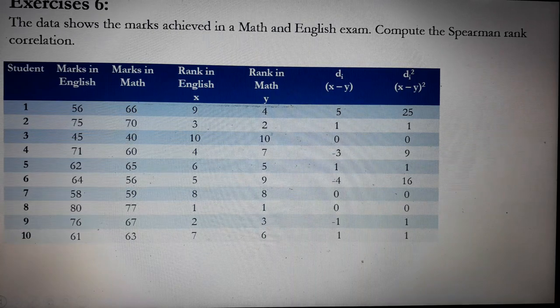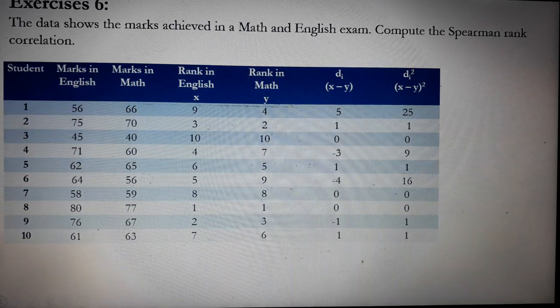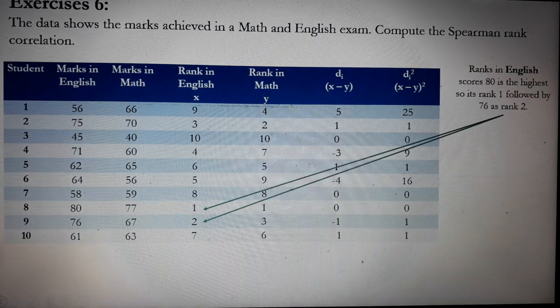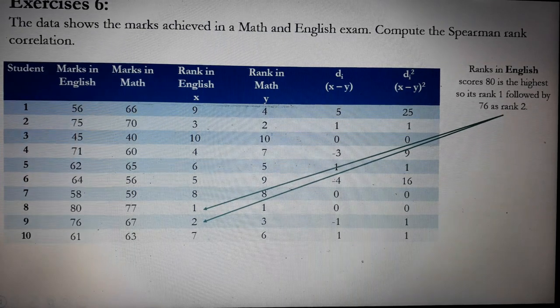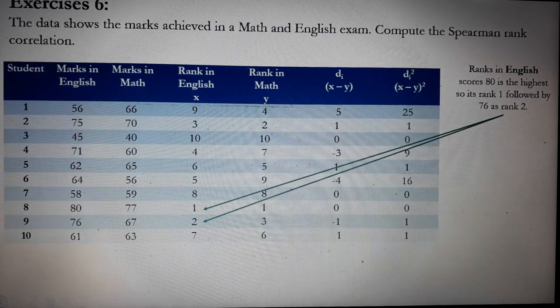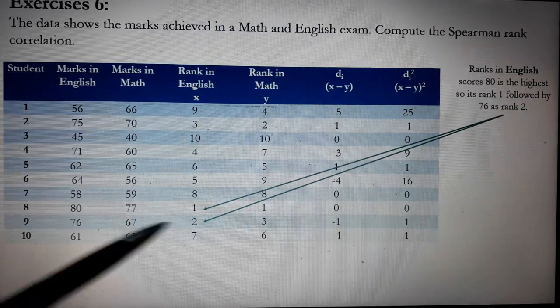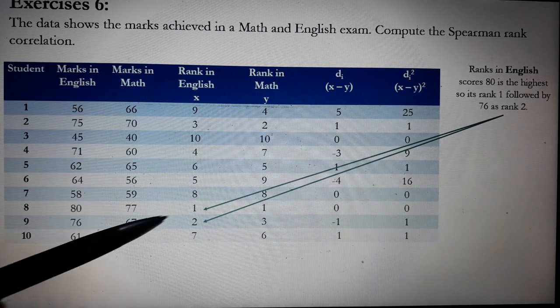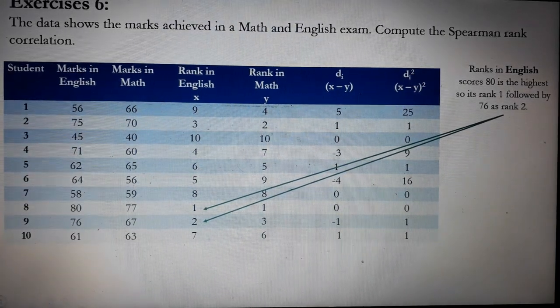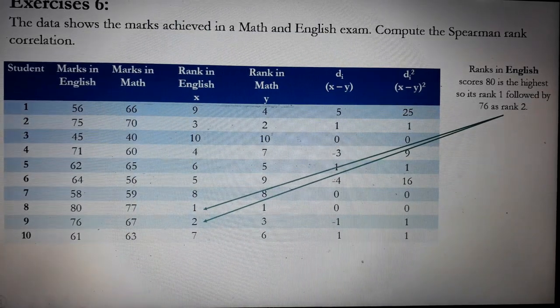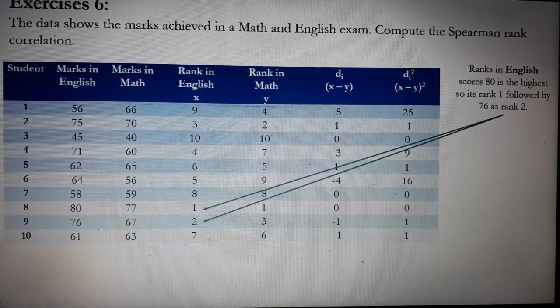So how do we come up with the rankings? Let's consider ranks 1 and 2 in English. So ranks in English, scores of 80 is the highest. This is the highest. Therefore, it's number 1. And then followed by 76. That's why it's number 2. And so on.